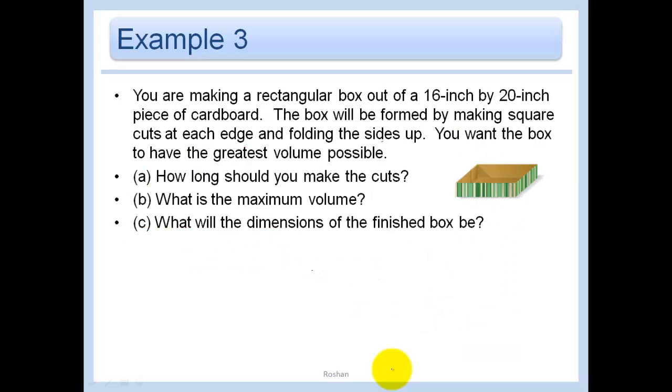Finally, you're making a rectangular box out of a 16 by 20 inch piece of cardboard. So we have this piece of cardboard, and it is 16 by 20. The box will be formed by making square cuts. So you're going to take these square cuts out of the sides. So let's just say that they're x by x. And what you're going to do is, you see here, you're going to fold the box.